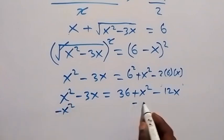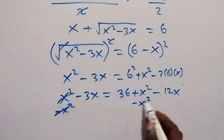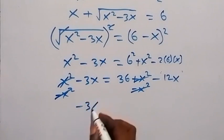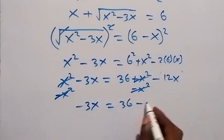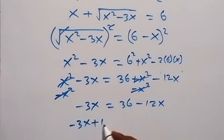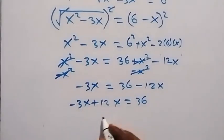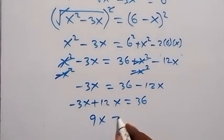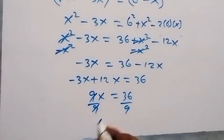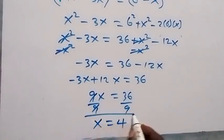We subtract x squared from both sides — x squared cancels on both sides. We are left with minus 3x equals 36 minus 12x. Taking minus 12x to the left it becomes plus 12x, so minus 3x plus 12x equals 36. That gives us 9x equals 36. Dividing both sides by 9, we get x equals 4.